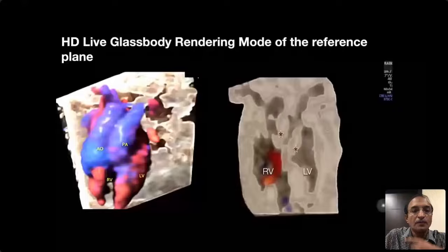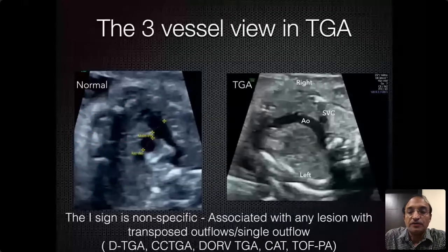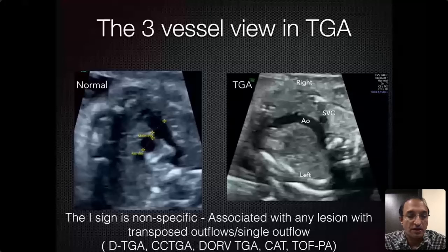The normal three vessel view is shown here. The three vessel view in TGA typically shows only two vessels. However, please note this is not pathognomonic or specific for TGA — it can also be found in corrected TGA, DORV TGA type, pulmonary atresia with VSD, and other conditions. So it is not a very specific sign.